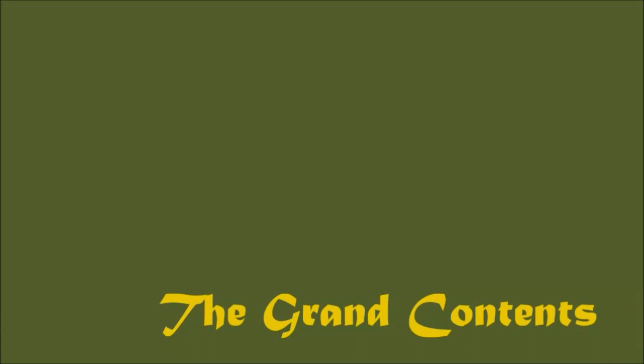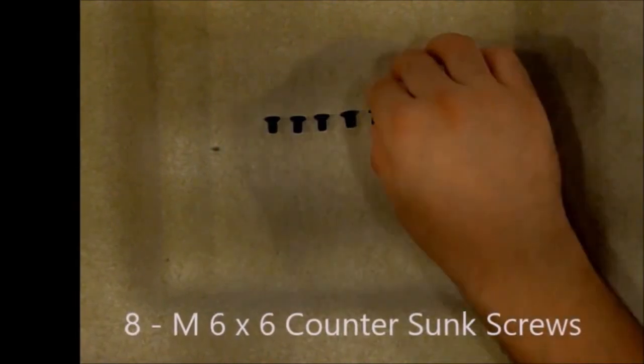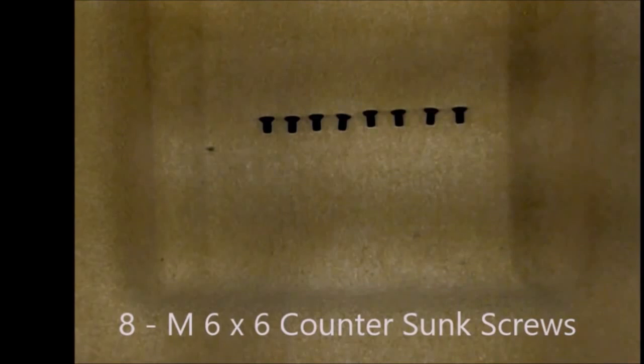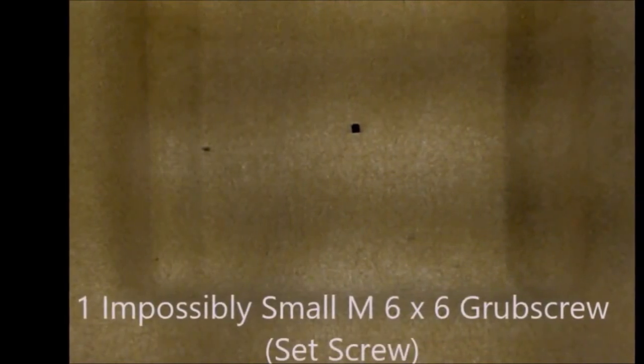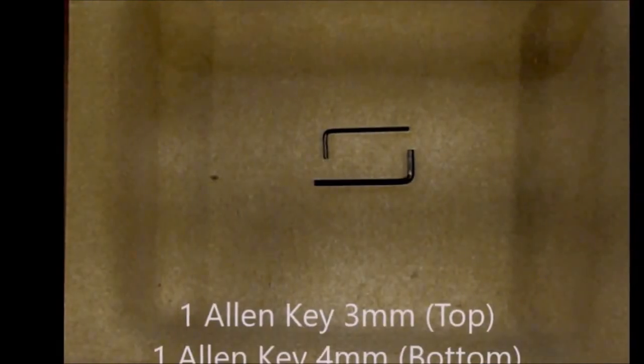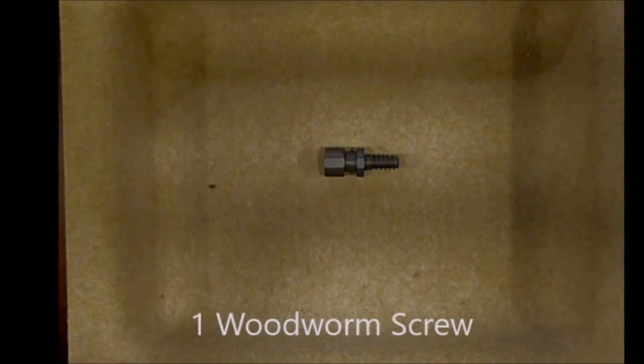The contents: eight countersunk screws, one impossibly small grub screw, two allen keys, one woodworm screw.